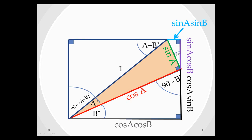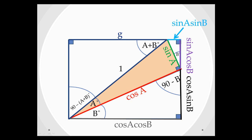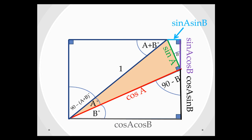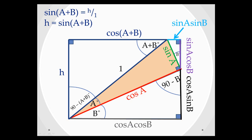Focusing on this triangle over here, if we call this side g, we can say that cos(A+B) is adjacent over hypotenuse, so g over 1, meaning g is just cos(A+B). Focusing on this side and calling it h, we can say that sin(A+B) is opposite over hypotenuse, so h over 1. Rearranging for h, we find that h is sin(A+B).